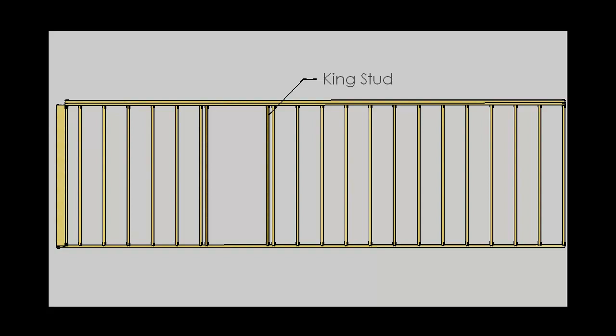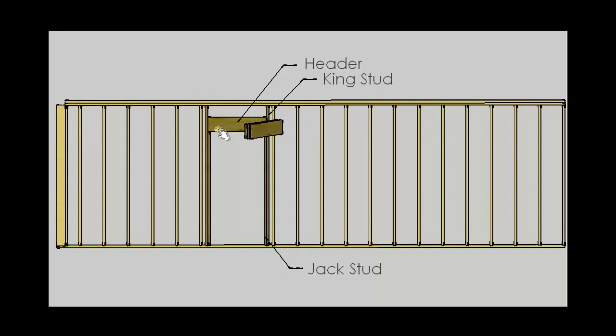Starting with a doorway, the opening begins with a full-height stud on each side — these are the king studs, creating the bookends of the frame. To the interior of each king stud is a jack stud that will establish the overall height of the opening by providing legs for the header to rest on. The header is the most critical part of the frame because it transfers the overhead load around the opening, which means it has to be a substantial piece of material.